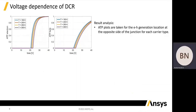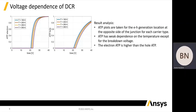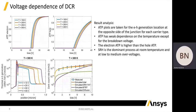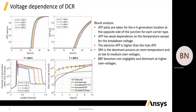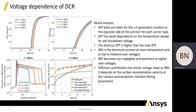ATP plots are taken for the carrier generation location at the opposite side of the junction for each carrier type. ATP has weak dependence on temperature except for the breakdown voltage. In the case of the device under study here, the electron ATP is higher than the hole ATP. The electron ATP is the dominant process at room temperature and at low to medium over-voltages. Band-to-band tunneling becomes non-negligible and dominant only at higher over-voltages when the tunneling barrier is reduced. Diffusion contribution has a similar voltage slope as SRH, and it depends on the surface recombination velocity at the contact-semiconductor interface, which is a fitting parameter.